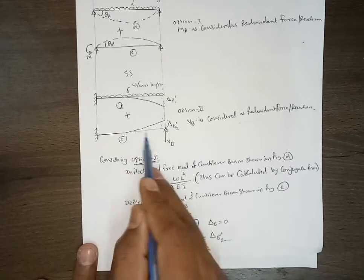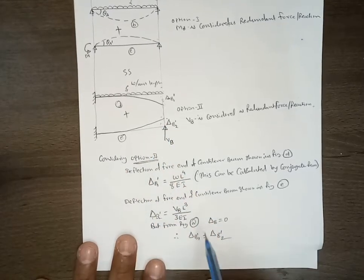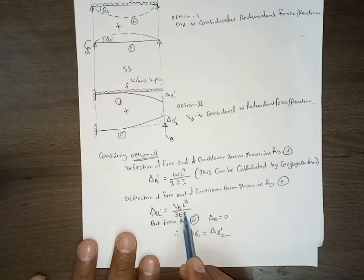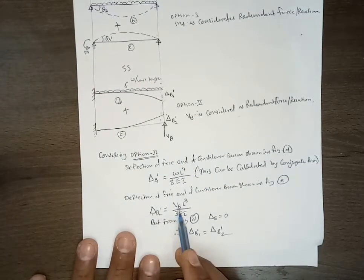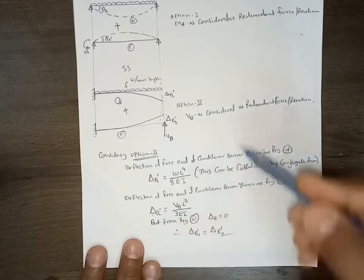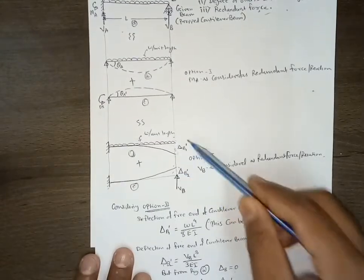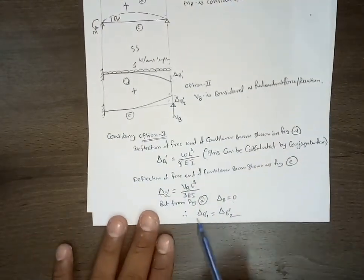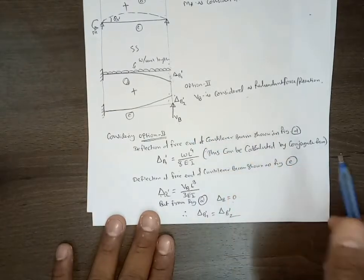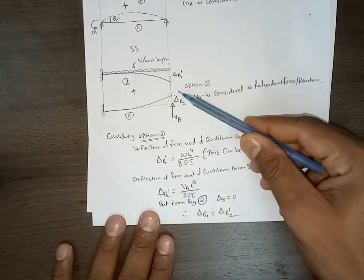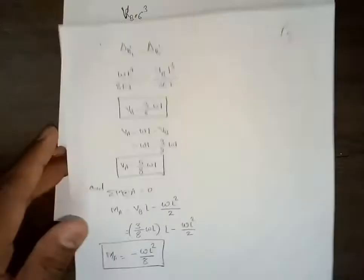For the second beam with a point load VB at the free end, the deflection is given by PL³ / 3EI, so delta-B-dash-two equals VB·L³ / 3EI. Since the actual deflection at B is zero, the sum of these two deflections must be zero. Therefore setting wL⁴ / 8EI equal to VB·L³ / 3EI and simplifying, we can calculate VB = 3wL / 8. This is the additional geometric compatibility condition used to solve the problem.